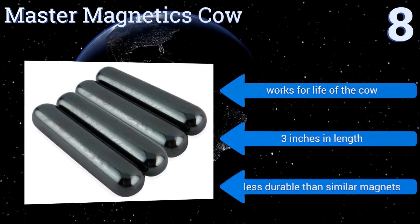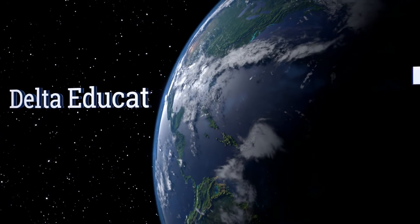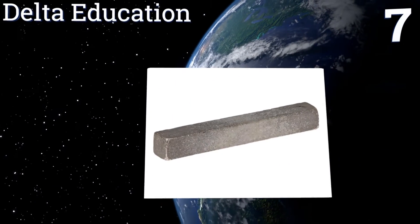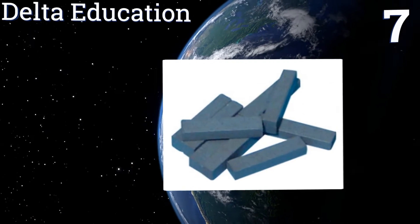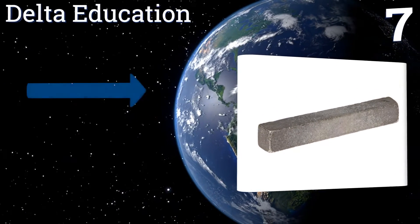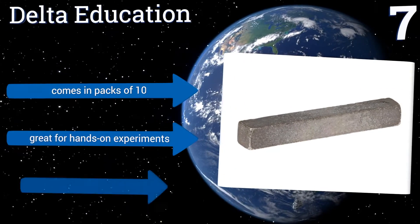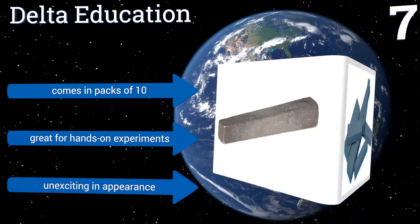At number 7, the Delta Education is ideal for elementary or middle school science projects and teaching children the fundamentals of magnetism. Each magnet in the pack is 1 inch in length, packing a potent punch despite its diminutive stature. It comes in packs of 10 and is great for hands-on experiments, but it is rather unexciting in appearance.